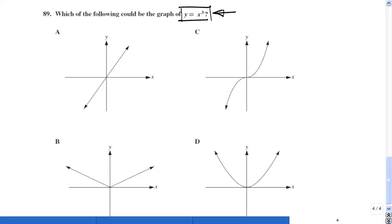Looking at the given equation, the fact that you have x to the third power should tell you that A and B cannot be the answers, because these two functions are linear functions. As you can see, you have straight lines, and because you have straight lines, these are not possible representations of y equals x to the third.